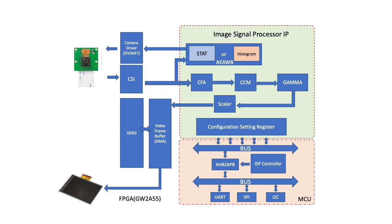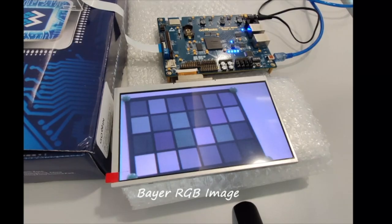With Goen releasing the Image Signal Processing Pipeline, or ISP, we wanted to show a demonstration of how Goen's ISP improves image quality by going over a few different IP cores.